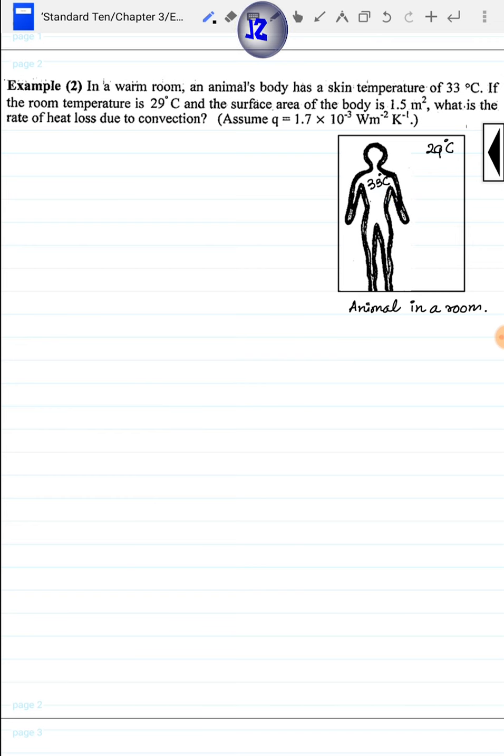Area is 1.5 meter square. The skin temperature is 33 degrees Celsius, and the room temperature is 29 degrees Celsius. T₂ is 33 and T₁ is 29.